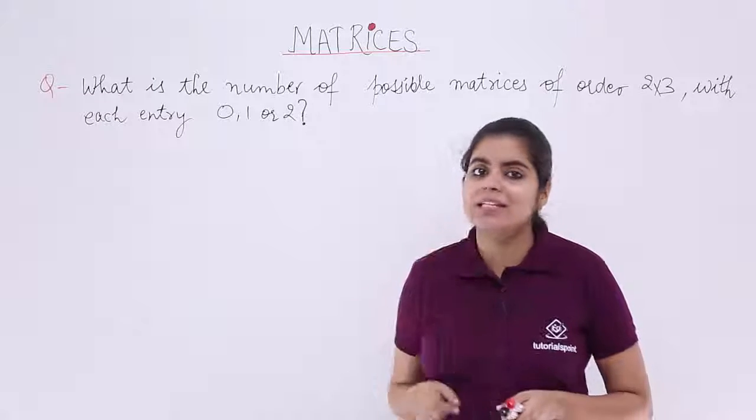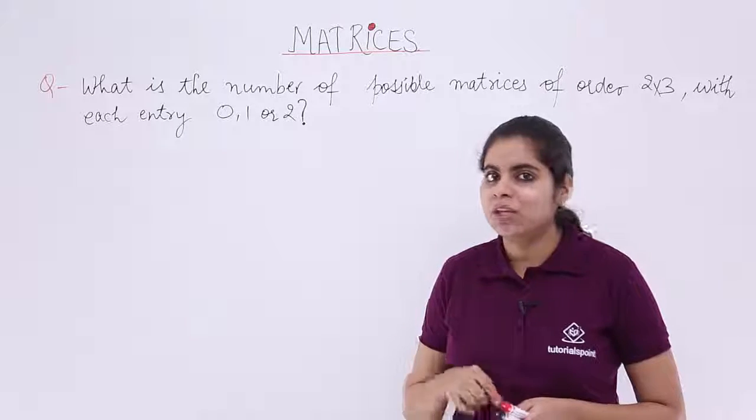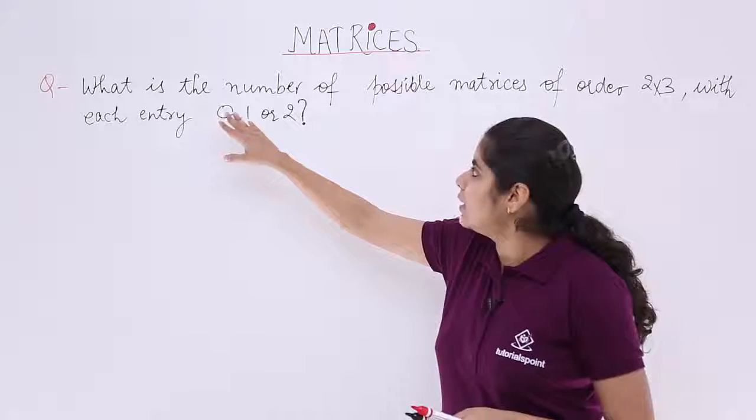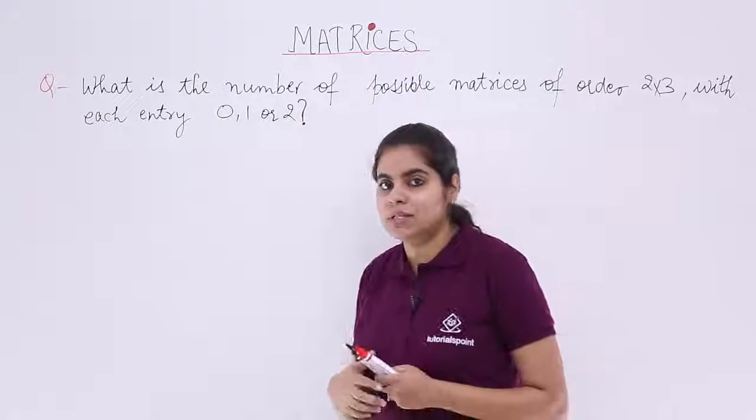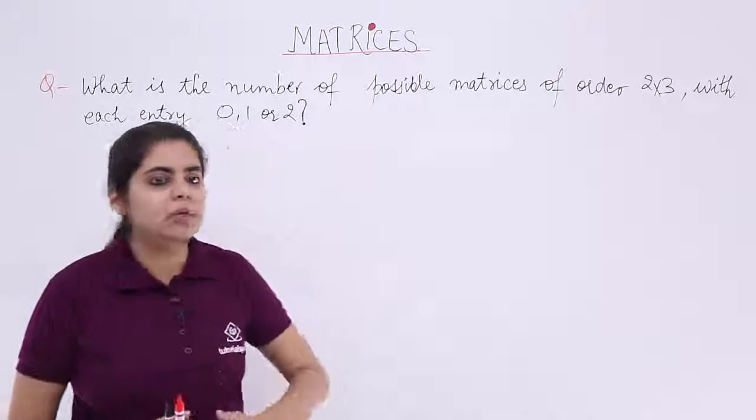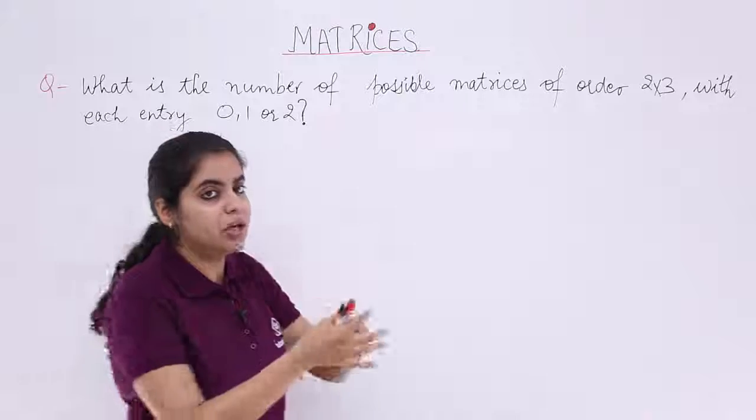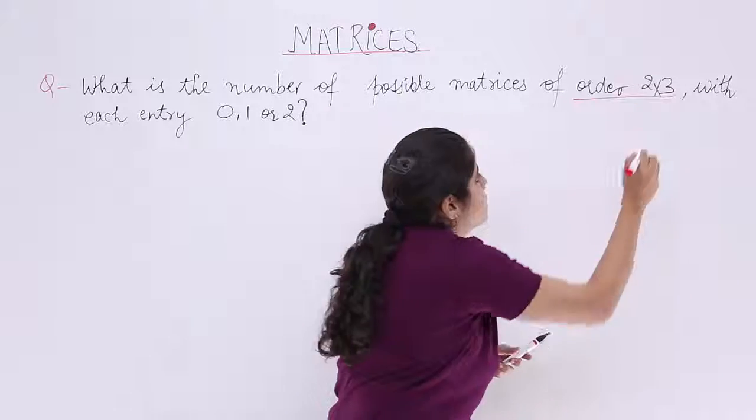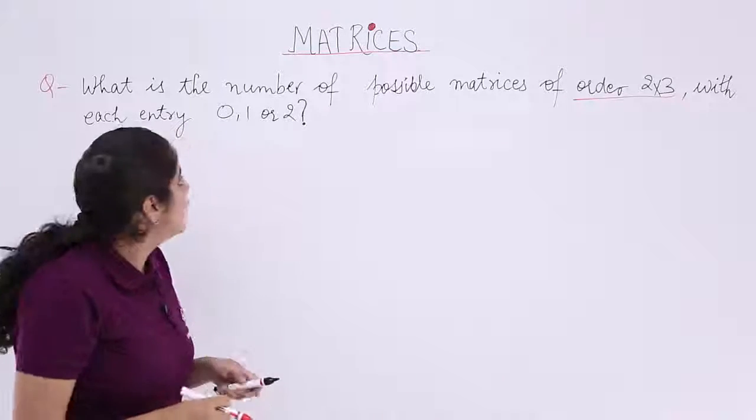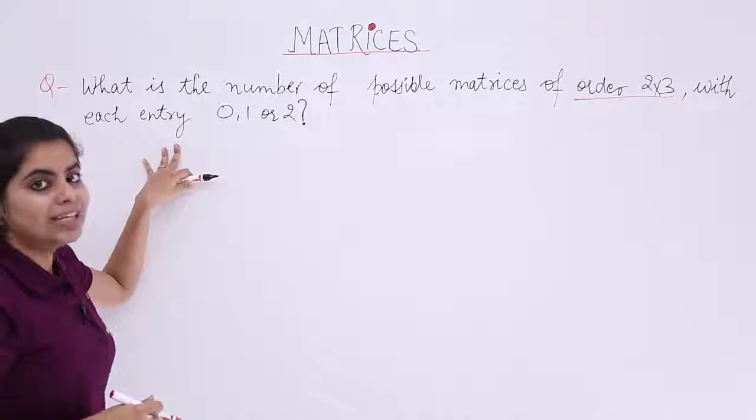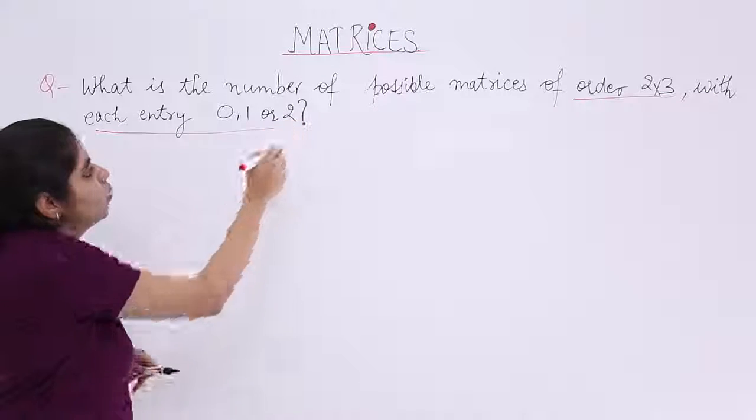Let's see what the question says and get started with the solution. The question asks: what is the number of possible matrices of order 2 by 3 with each entry or element as 0, 1, or 2?